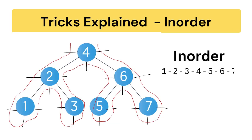For in-order traversal, we follow where the middle line strikes. So the middle line strikes at number 1 first, then 2, then 3, then 4, then 5, then 6, and finally 7. So we are getting the traversal order in ascending order: 1, 2, 3, 4, 5, 6, 7.